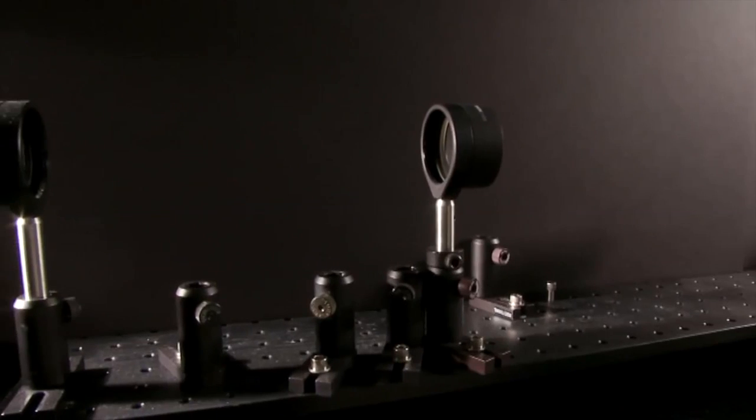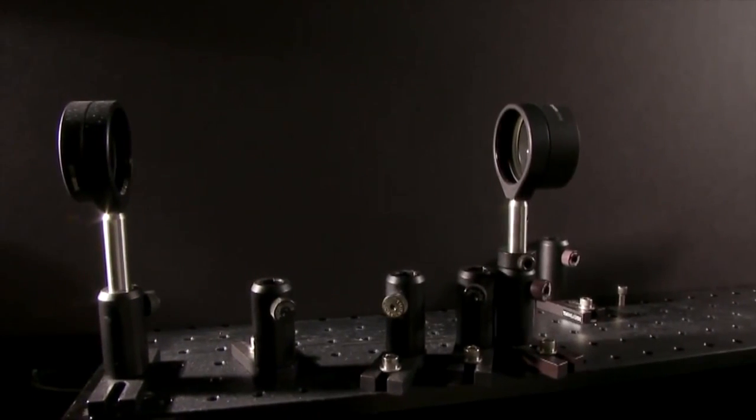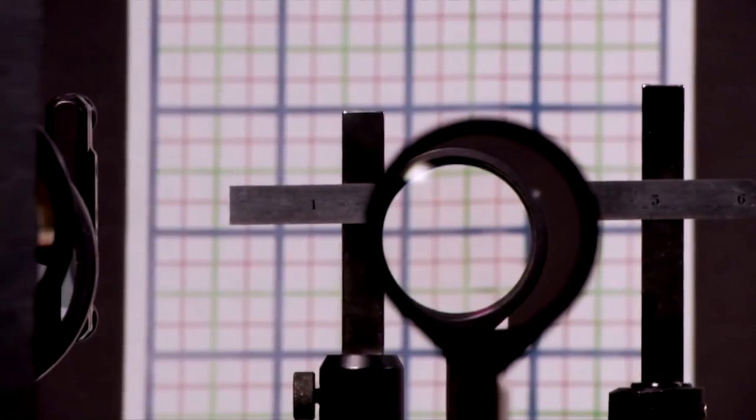Even though they're calling it the Rochester Cloak, it isn't a cloak at all. The lenses bend the light around the object, so it stays hidden even in three dimensions.